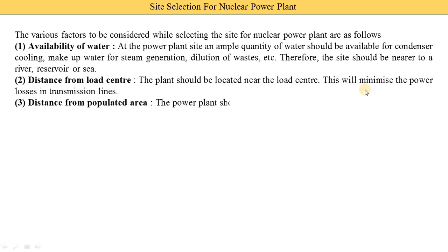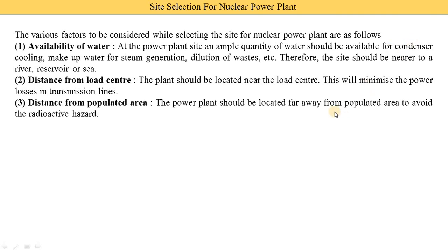The third point is distance from populated areas. The power plant shall be located far away from populated areas to avoid radioactive hazards. If any accident occurs in the nuclear power plant, there is a chance of radioactive hazards. That is why the plant shall be located away from populated areas.